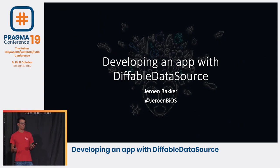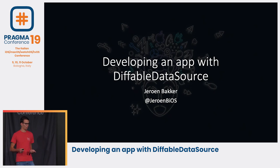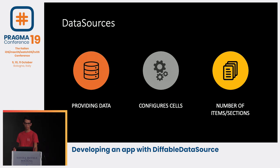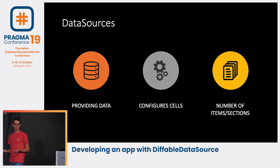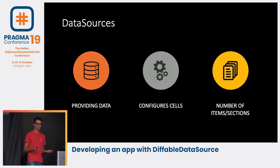To do that, let's make a collection view of a list of speakers where we want to display an avatar, their name, and their Twitter handle. Before we start, let's first look at what our data source needs to do. Our data source provides us data, we need to configure cells so we can return them, and we'll specify the number of items and sections.